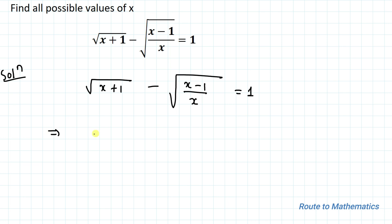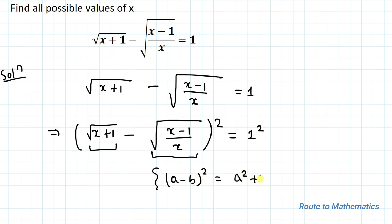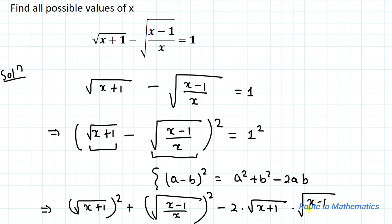Squaring both sides of the equation, we have: root under (x+1) minus root under (x-1)/x, whole square, equals 1 squared. We will consider the first term as a and the second term as b. Using the algebraic identity (a−b)² = a² + b² − 2ab, we can expand accordingly.